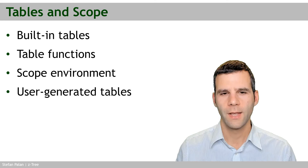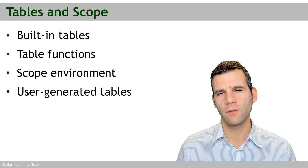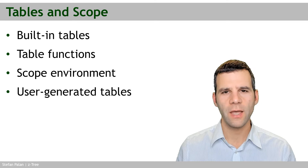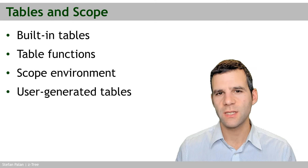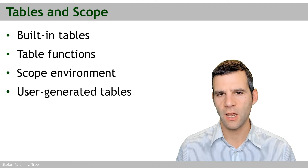The next chapter is called Tables and Scope. While it may be the most challenging chapter in this course, it will also be one of the most rewarding. We'll start by discussing the built-in tables Z3 creates whenever you open a new treatment, and what specific functions these tables have and how you can optimally utilize them. We'll then discuss table functions, which work on the records and rows in your tables.